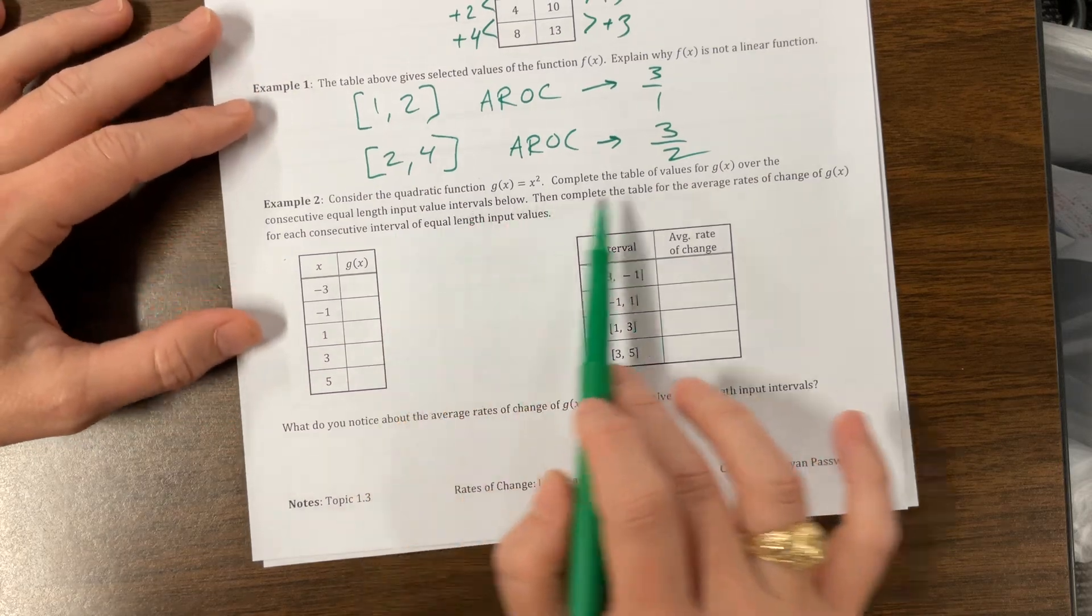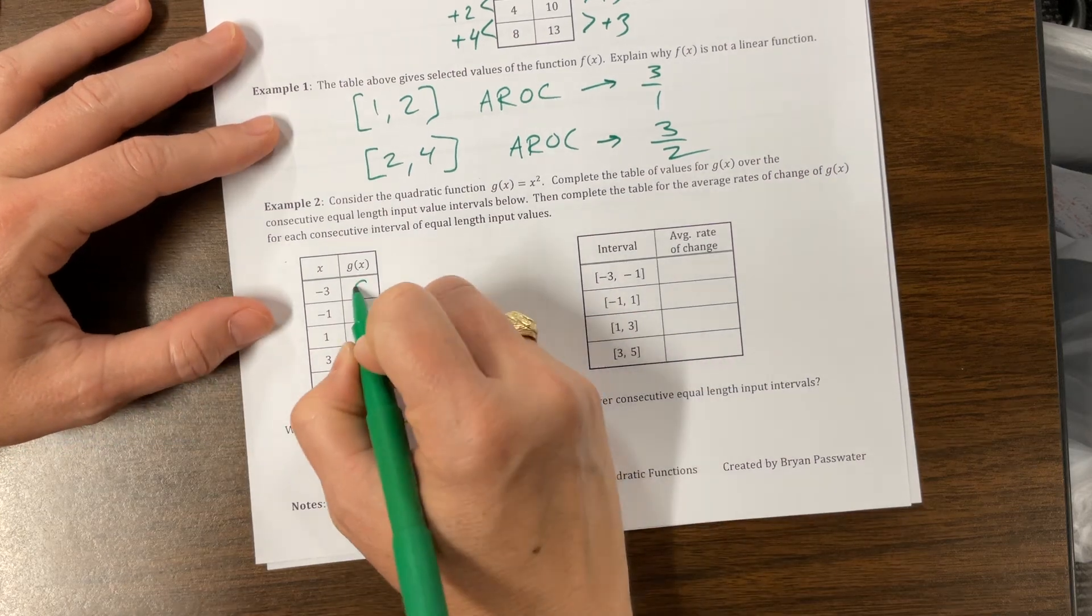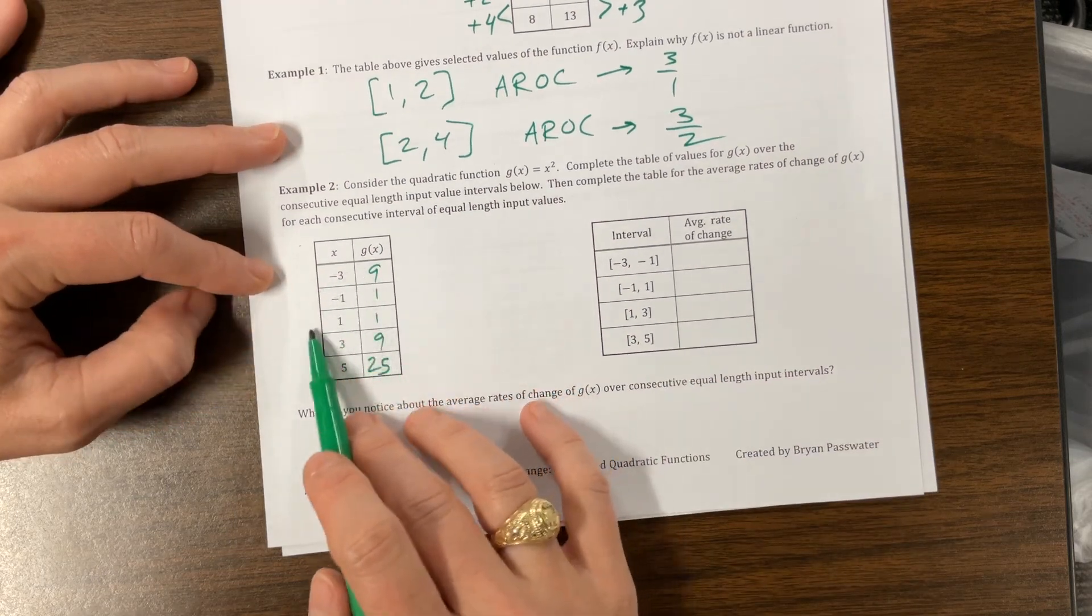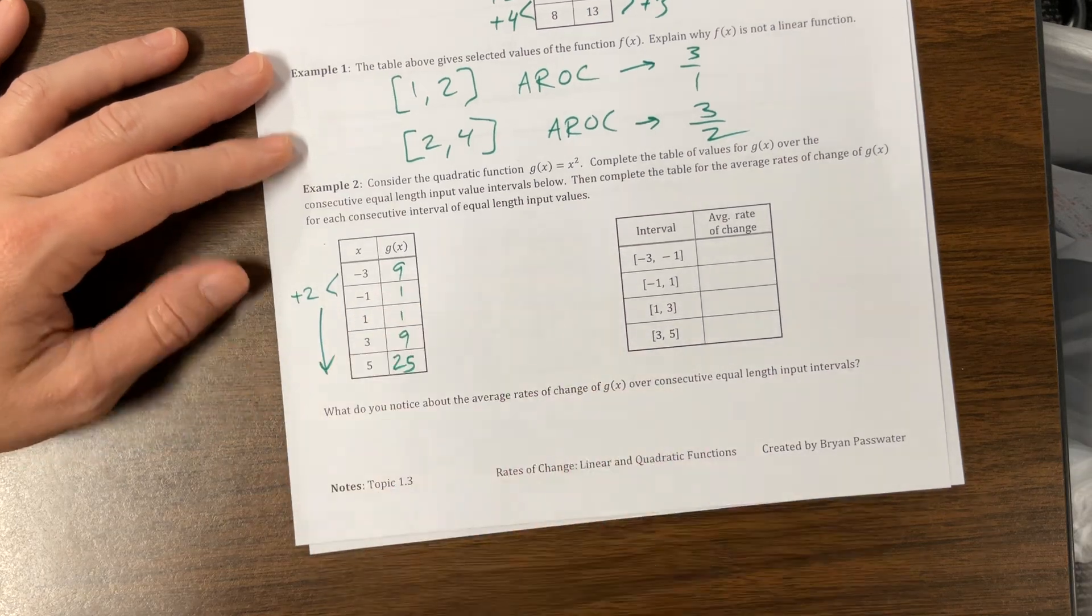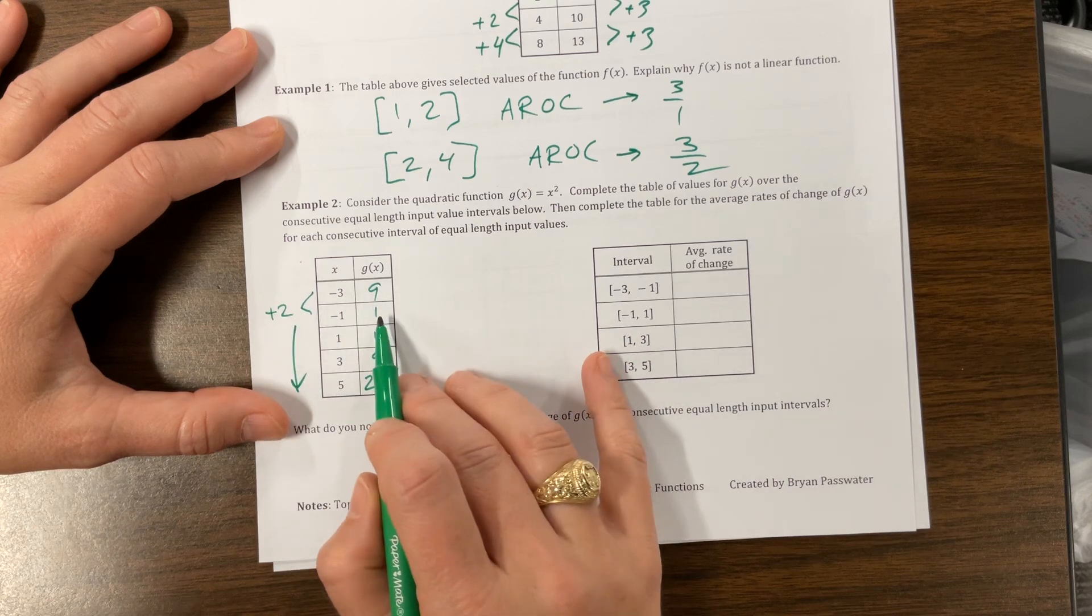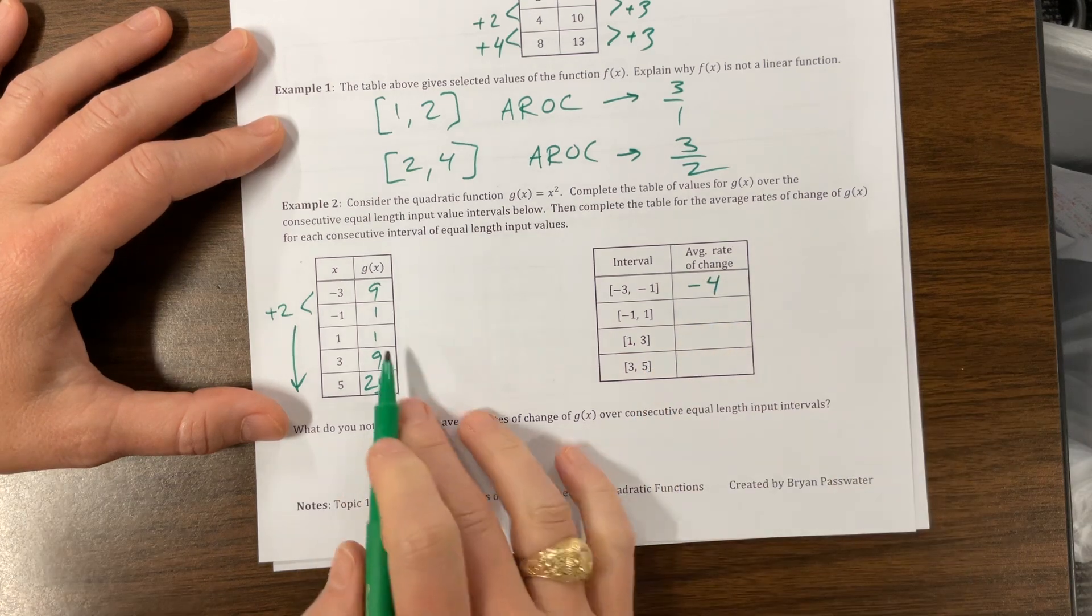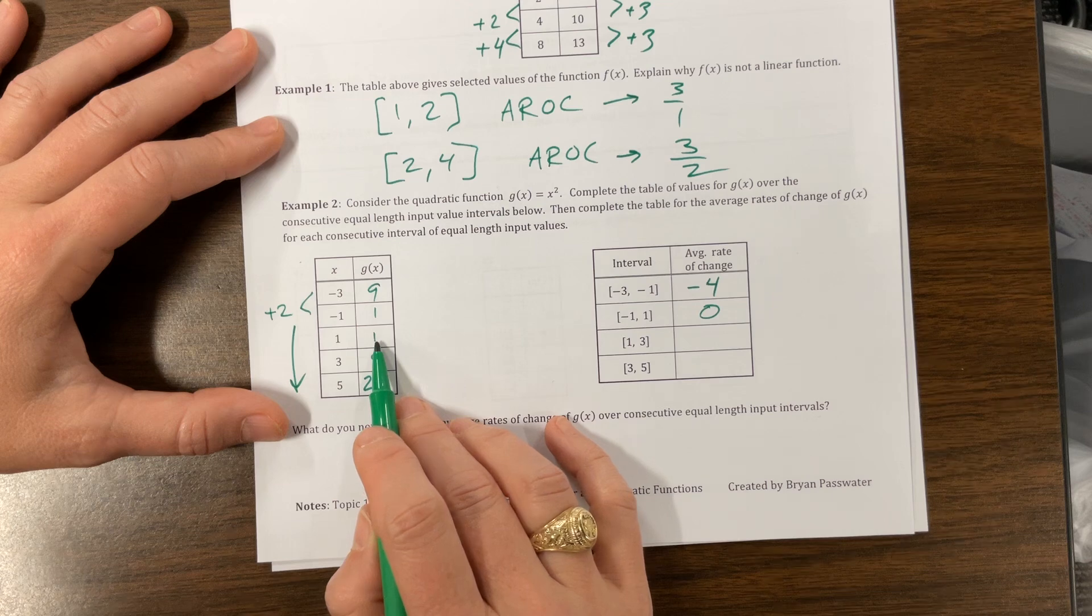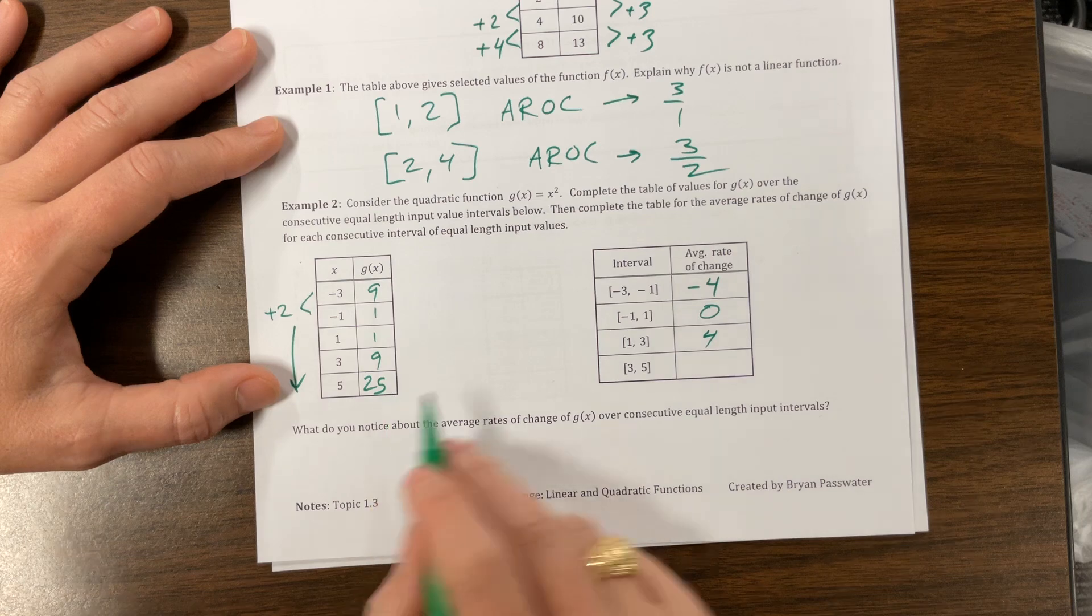Consider the quadratic function g of x equals x squared, complete the table. So 9, 1, 1, 9, 25. Average rate of change. On this, we do add 2 each way, so the denominator this whole time, we were adding 2. So the average rate of change is going to be this minus this over 2. So 1 minus 9 is negative 8 over 2 is negative 4. 1 minus 1 is 0 over 2 is still just 0. 9 minus 1 is 8 over 2 is 4. This minus this is 16 divided by 2 is 8.